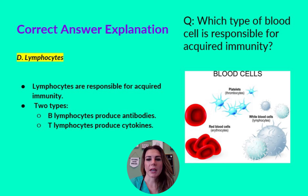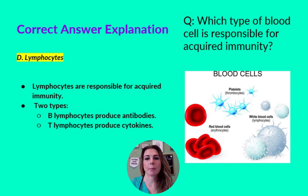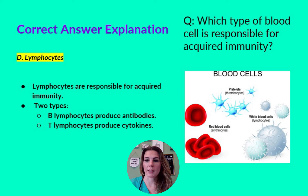Now we can discuss lymphocytes. There are two types of lymphocytes. B lymphocytes produce antibodies — remember that antibodies mark infected cells or foreign cells for destruction by other immune cells. T lymphocytes produce cytokines — remember that cytokines destroy infected cells and cancerous cells. There is an image here for you to review as well.